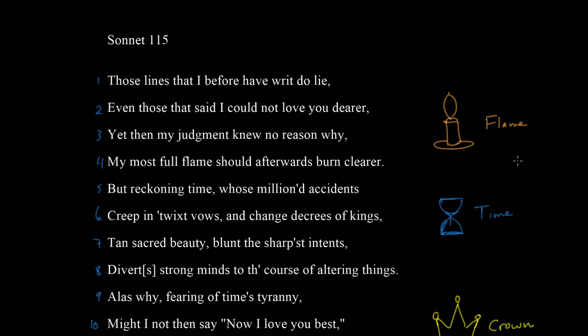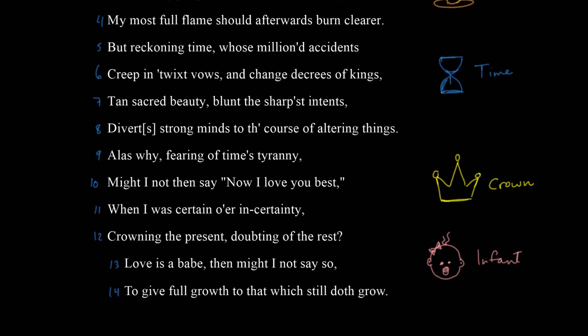Before we jump into this, I do want to point out that in the original text, which you can find online — and I'll show you how to do that at the end of this video — in the original text some of the punctuation is different, some of the spelling is different. Most of the time this doesn't really matter, but in this poem there are two places where I do think it is critical to know what the original looked like. If we look at line 8 of this sonnet, you will notice that I've added an S in square brackets here.